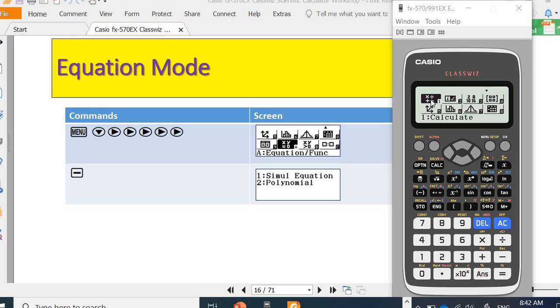First of all, in the normal calculate mode, you can go down, find the equations mode, and press equal.